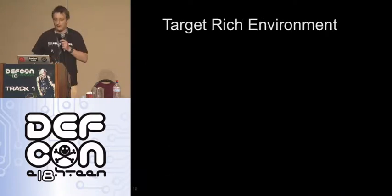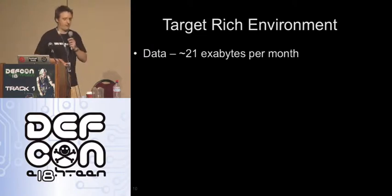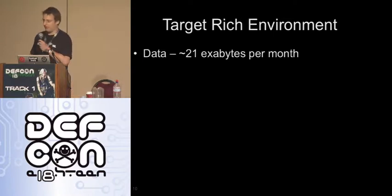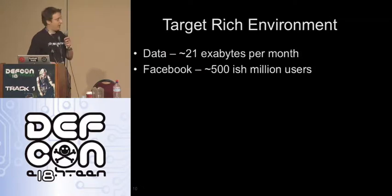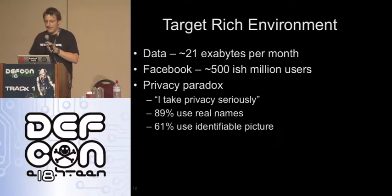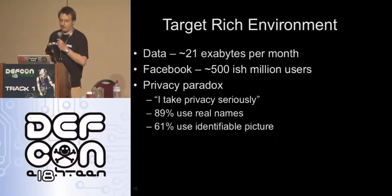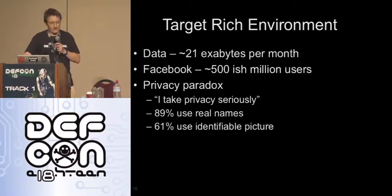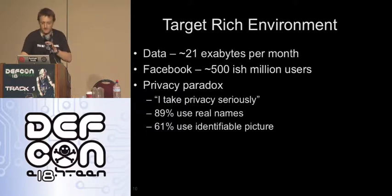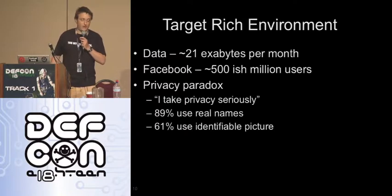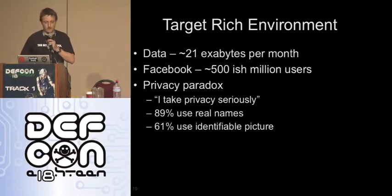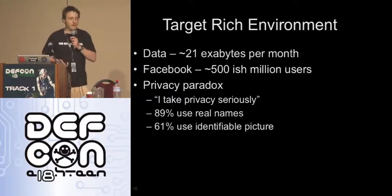Target-rich environment, real quick: there's a Cisco report saying there's 21 exabytes of data flowing around per month. Facebook had around 500 million users, Twitter 100 million, and so on — a lot of people have their information out there. There's something I noticed called the privacy paradox. A study by Stanford — or Carnegie, it's in the white paper — interviewed a bunch of students who said they take security and privacy seriously, especially with social networking. But when they looked at their actual profiles, they were doing the exact opposite: 89% used their real names, 61% used identifiable pictures.